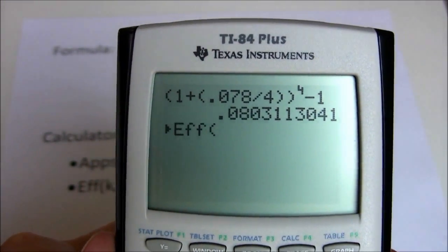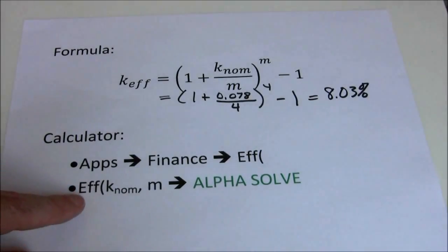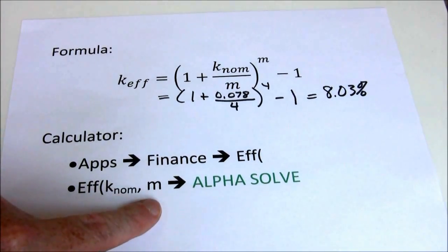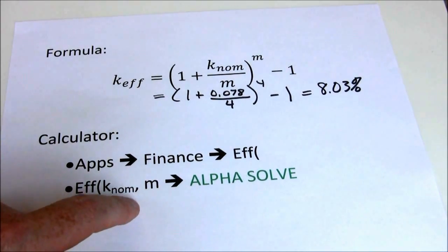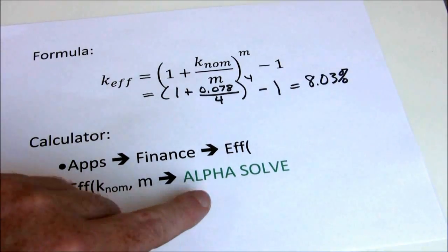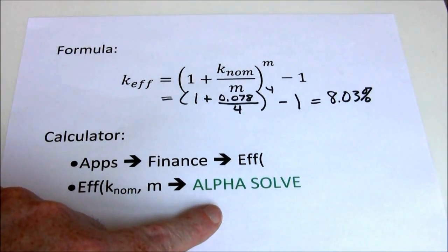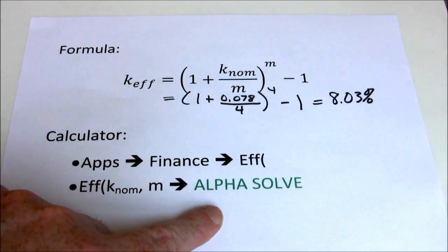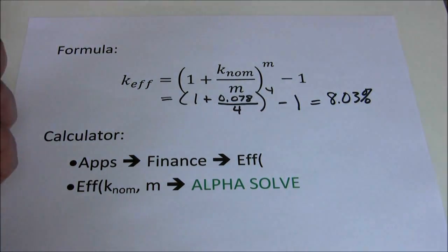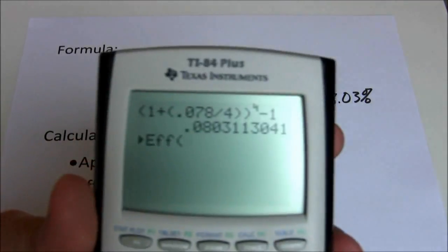Now I see effective. The approach for effective is the nominal rate comma m. If you want to you can close the parenthesis, you don't need to. Then you want to alpha solve. I put that in green here as a reminder that you need to press that green before you press enter in order to get the right answer. So we've got our effective.